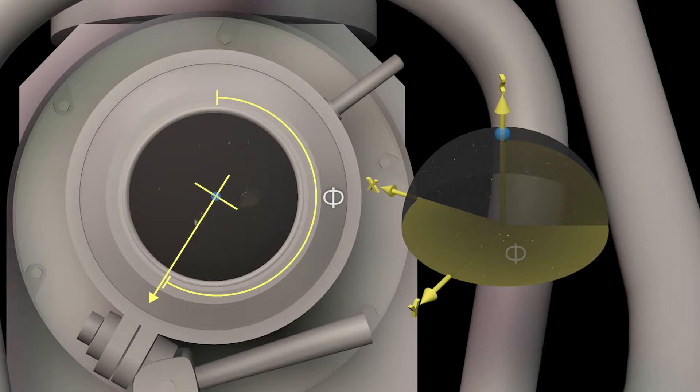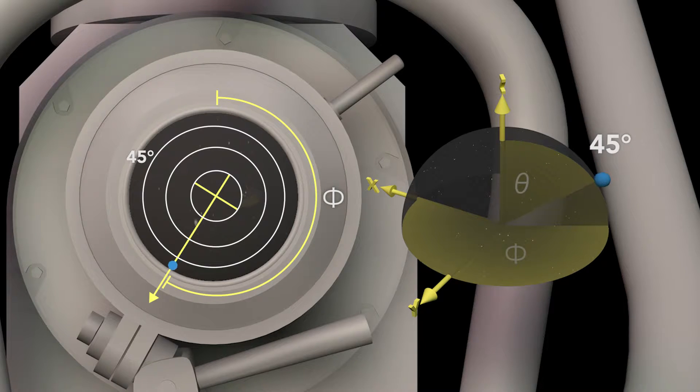To see this, watch what happens as this blue ball moves along the surface of the hemisphere. If it's on the z-axis, theta equals zero, and the ball appears at the center of the lens. As it rolls along the hemisphere toward the x-y plane, notice that its distance from the center increases until theta equals 60, it reaches the perimeter of the lens.